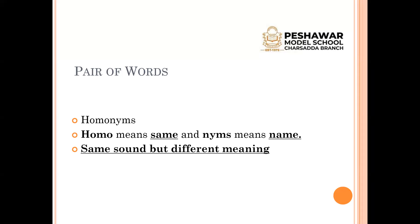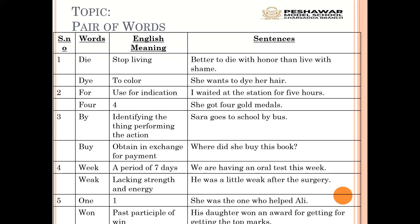Let's move towards the writing. You should give a proper heading. Write the topic with a marker — black or blue, the choice is yours. Whatever we write with the marker, we should underline it with a pencil. Then in the second line, below the topic, write 'pair of words' with marker and then underline it.